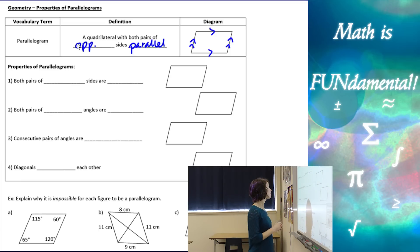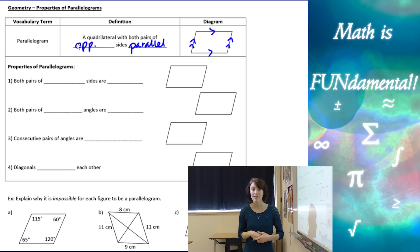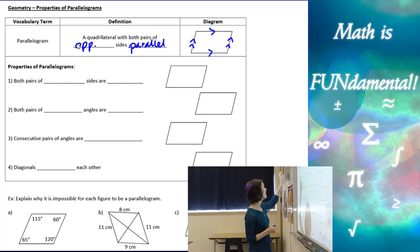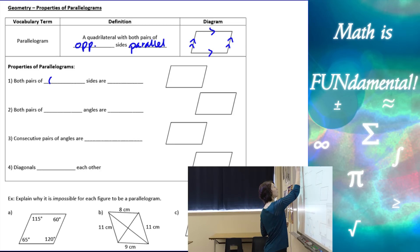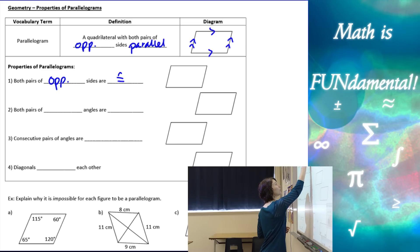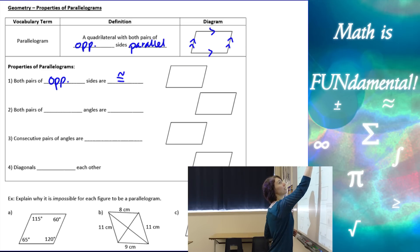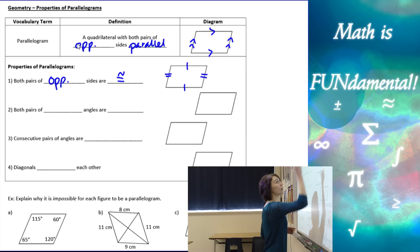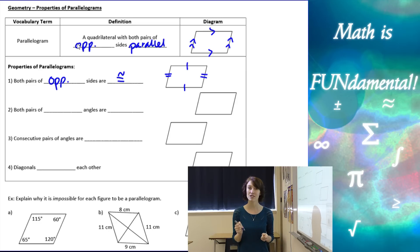Two pairs of parallel sides. Now along with the definition, we also have some properties of parallelograms — and this is where we get into all the good stuff. The first property: both pairs of opposite sides have to be congruent. On our diagram we can mark our opposite sides with the dash symbol, which symbolizes congruence.